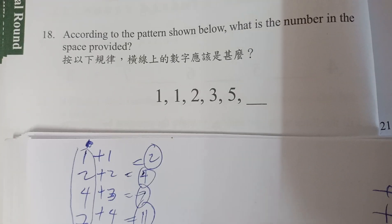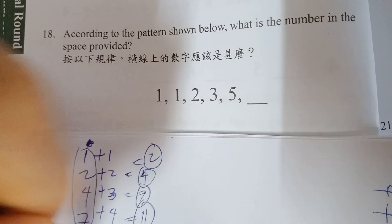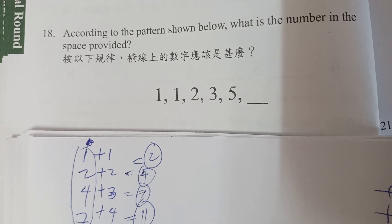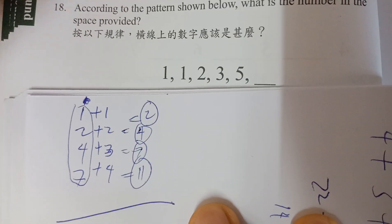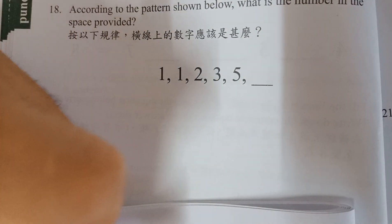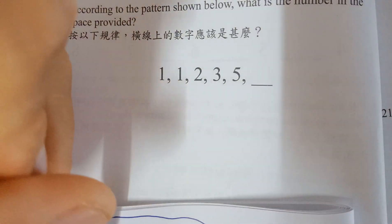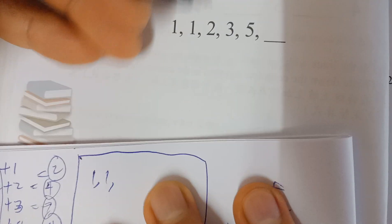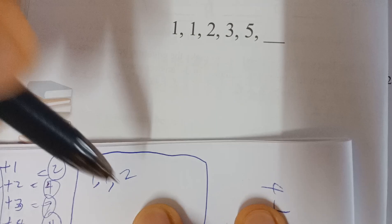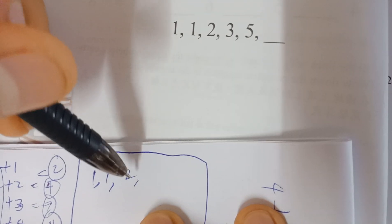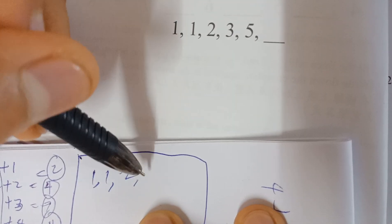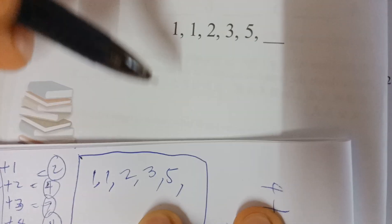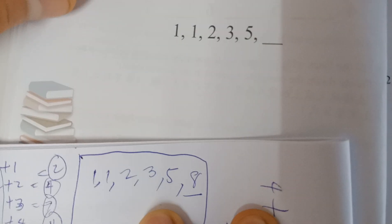Number eighteen: in this pattern, what is the next number? This is the Fibonacci sequence — start with 1 and 1, then add the two previous numbers to get the next. 1+1=2, 1+2=3, 2+3=5, 3+5=8. The answer in the blank is 8.